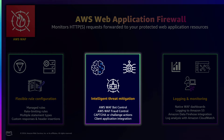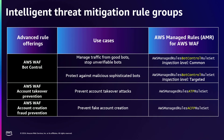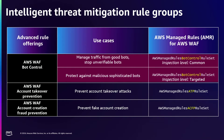Starting with the advanced managed rules — this table covers some of our rule offerings and different use cases that are best fit. I'll start by talking about the AWS WAF bot control rule sets. We have two levels of inspection: the common and targeted. If you are looking to manage traffic from good bots and block any unverified bots, the common level is a good option for you.